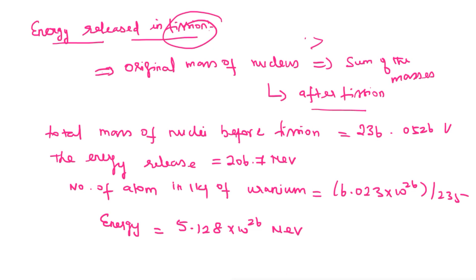After that, we apply conversions between mega electron volt and kilo watt hour to find out the energy from the fission reaction. Finally, E is equal to 2.26 into 10 power 7 kilo watt hours. These are all important points for energy released in fission — definitely one or two questions may be asked.